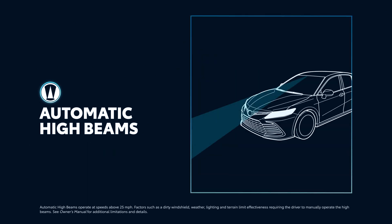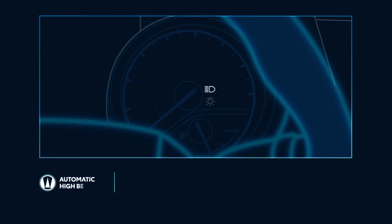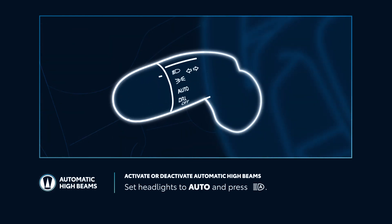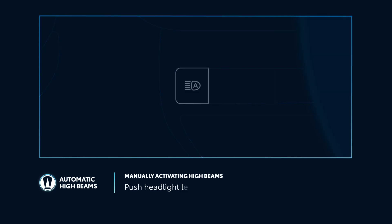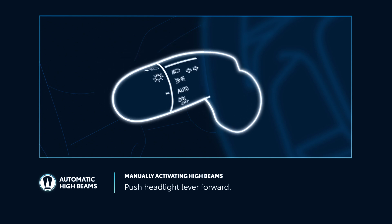Automatic High Beams, or AHB, aids nighttime driving by using a camera to detect headlights and taillights of preceding vehicles, and then toggle accordingly between high and low beams. AHB is different from other Toyota Safety Sense features in that it's not controlled through the multi-information display and steering wheel buttons. Instead, simply set the headlight switch to Auto and press the AHB button to activate or deactivate it. High beams can still be activated manually by pushing the headlight lever forward, while low beams can be activated manually by changing the switch from Auto.